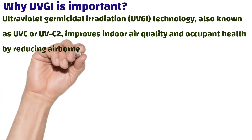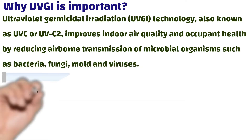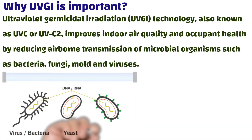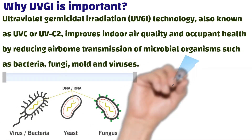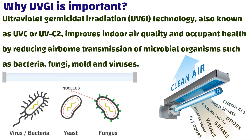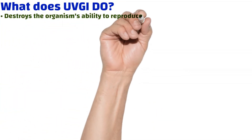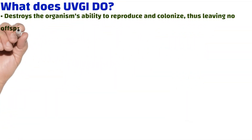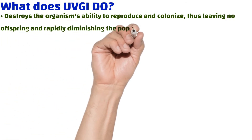Why is UVGI important? Ultraviolet germicidal irradiation technology, also known as UVC, improves indoor air quality and occupant health by reducing airborne transmission of microbial organisms such as bacteria, fungi, mold, and viruses.